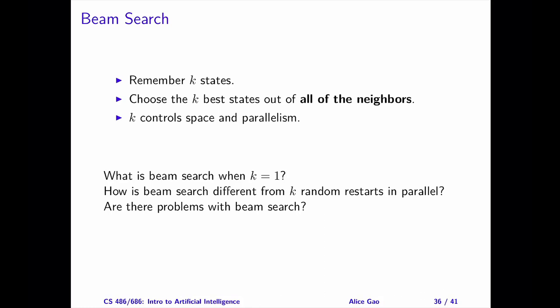Question 2: how is beam search different from greedy descent with k random restarts in parallel? If we run k random restarts, these random restarts are independent from each other — each search updates its state independent of the other states. However, with beam search, we're choosing the k best states among all the neighbors of the k current states. Intuitively, the k states are not operating independently, and there's some sort of communication among them.